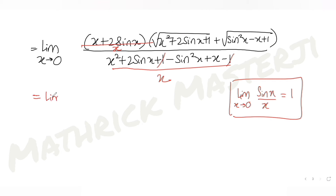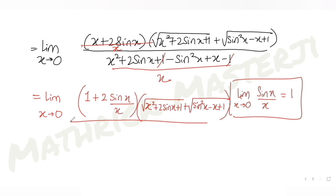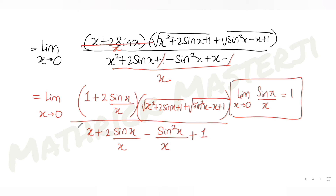Writing out the full divided form: the numerator becomes (1 plus 2·(sinx/x)) times (√(x²+2sinx+1) + √(sin²x−x+1)). The denominator after dividing by x gives: x plus 2·(sinx/x) minus (sin²x/x) plus 1. Note that sin²x/x can be written as (sinx/x)·sinx, and x/x equals 1.